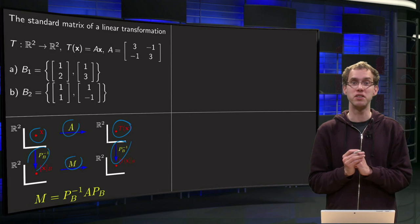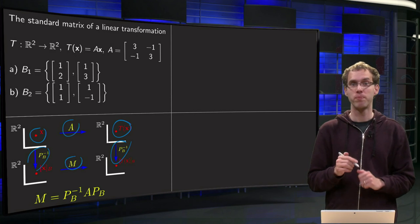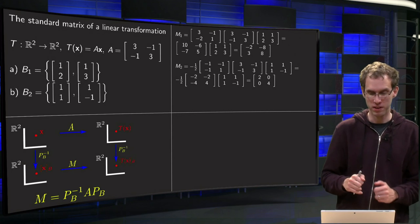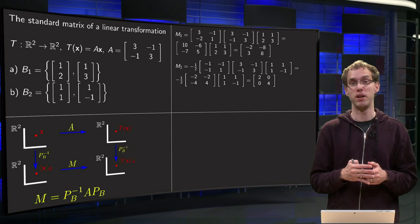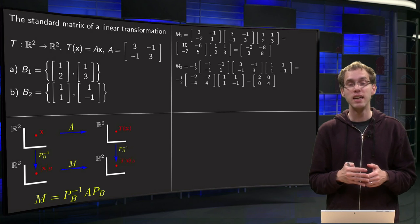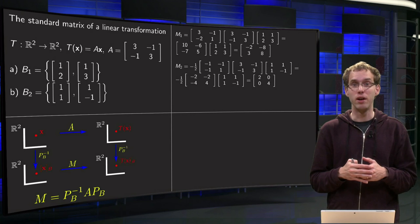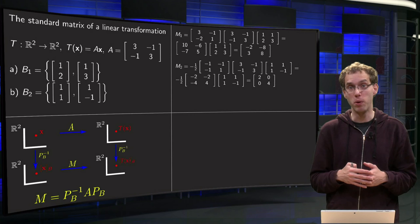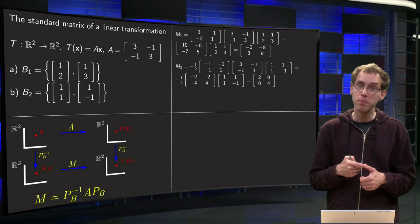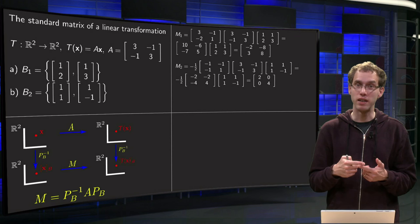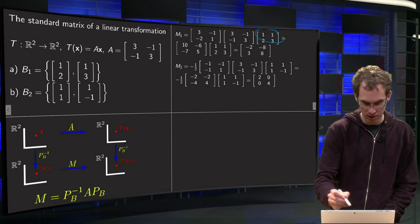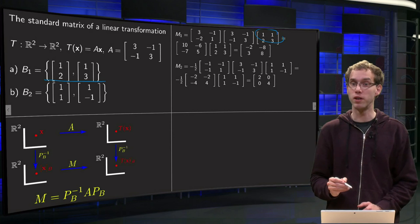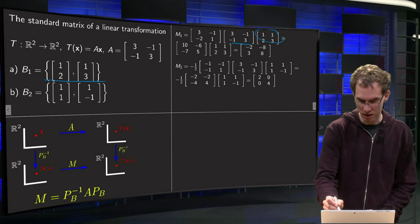And PB just contains the basis vectors b1 and b2. So what happens if we compute M1, the matrix of the transformation T with respect to the basis B1? So then we need to compute PB1 inverse times A times PB. So we have our PB over there, just contains the basis vectors b1 and b2. Our matrix A over here.